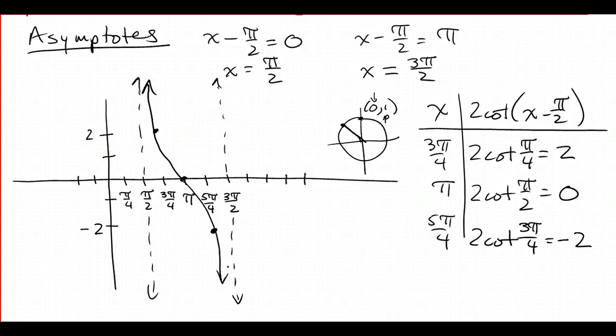And then I just need to draw 2 more cycles. So skip 3 spots, draw an asymptote where it will be undefined again. And then I'm at 2, 0, negative 2. Okay, and then skip 3 spots, draw another asymptote. Negative pi over 4. So I'm going to be at 2, 0, negative 2. Smooth curve, approach the asymptotes, don't cross or touch.